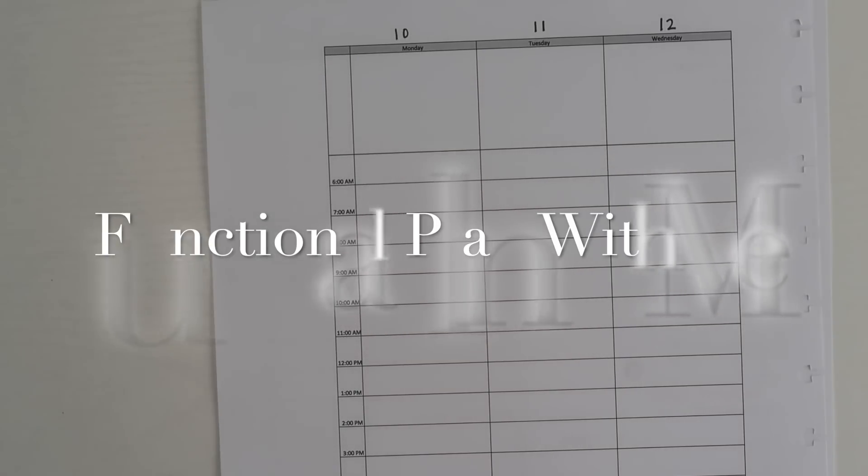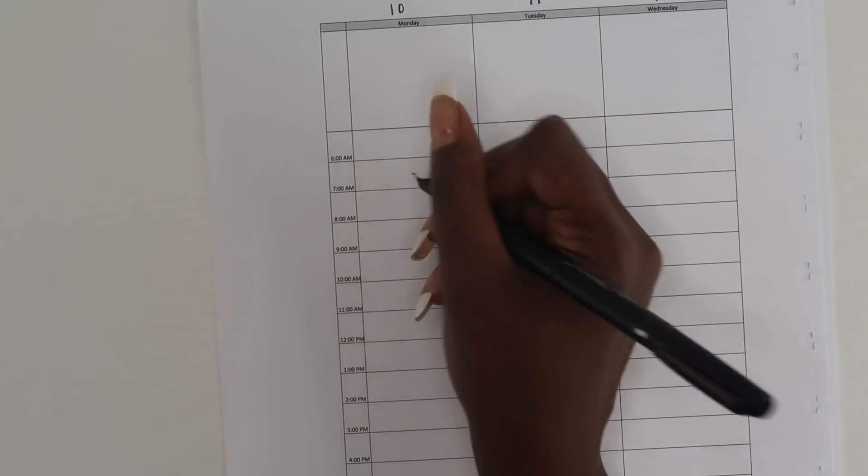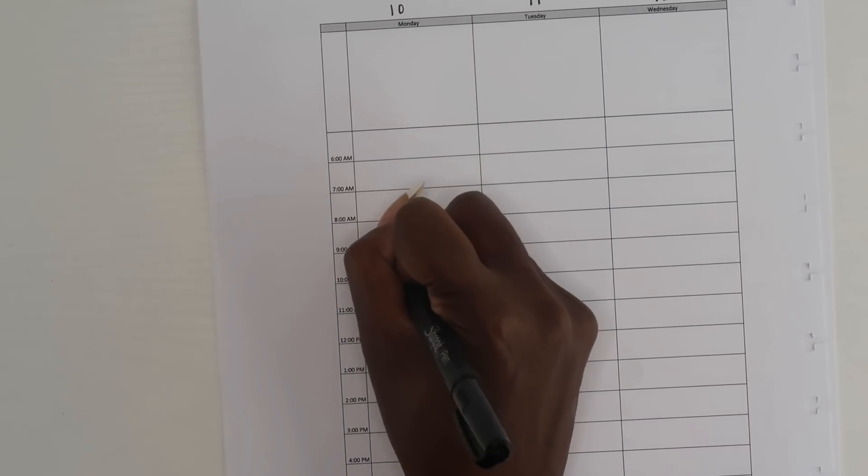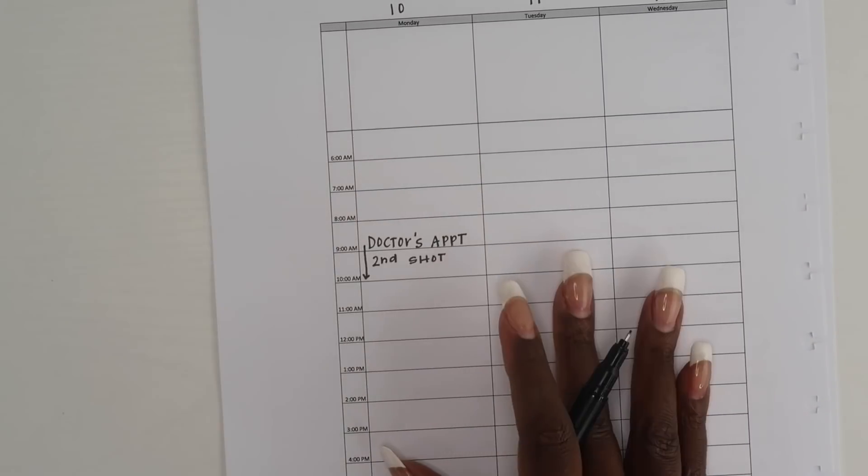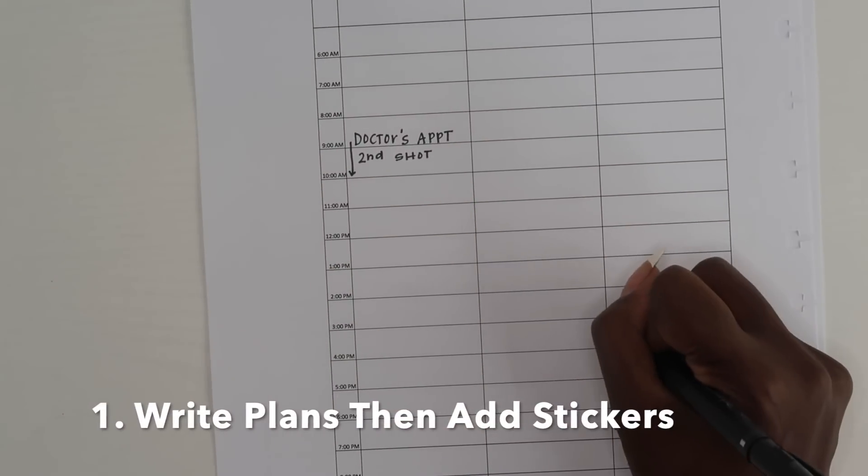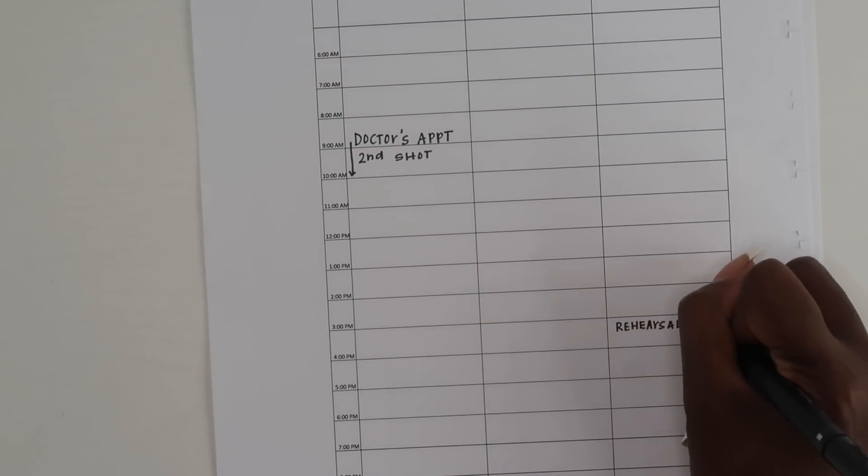Now let's jump into the functional planning tips. My very first tip is something that I just started doing recently, maybe in the last two to three weeks in my planner, and that is to write in all of my plans first and then I will add stickers.